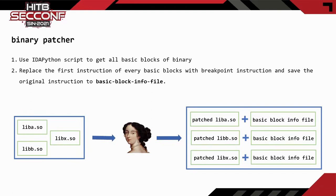Then, the binary patch module will start multiple IDA instances to analyze these target libraries. After the analysis is completed, it will use an IDA Python script to extract the information of each basic block and save it as a basic block info file. Finally, the binary patch module will patch the target library according to the basic block info file, replacing the first instruction of each basic block with the breakpoint instruction.